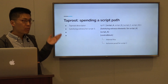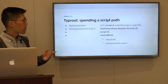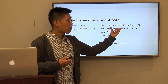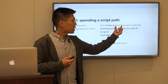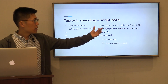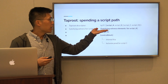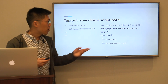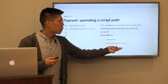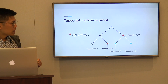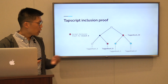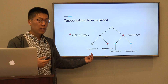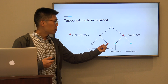Let's look at how we can spend a TAP root along a specific TAP script that's committed to the TAP tree. In this TAP root descriptor, we have our internal key P and four different TAP scripts committed to this TAP tree: TAP script A, TAP script B, TAP script C, and TAP script D. In order to spend script A, we need to provide in the spending witness: the satisfying witness elements for script A, script A itself, and a control block, which consists of the internal key of the TAP root output as well as an inclusion proof for script A. Here's a visual representation of our inclusion proof. We are trying to spend along branch A, and in order to prove to the verifier that we are spending a committed script, we need to provide the proof consisting of tag hash B and tag hash CD.